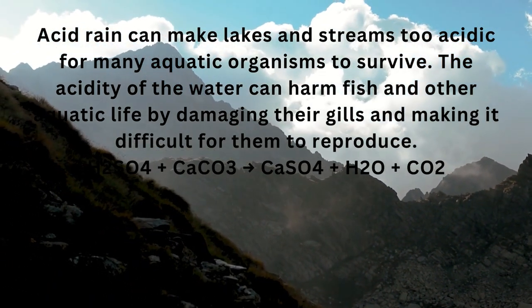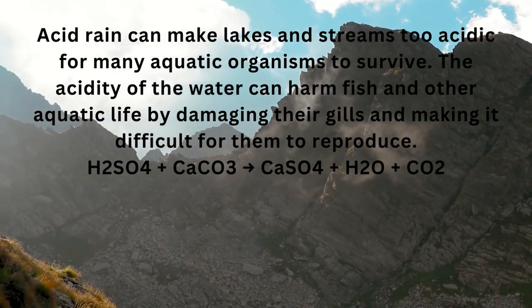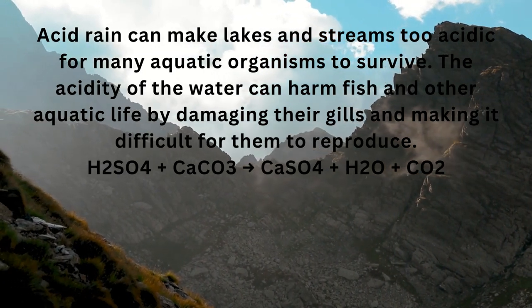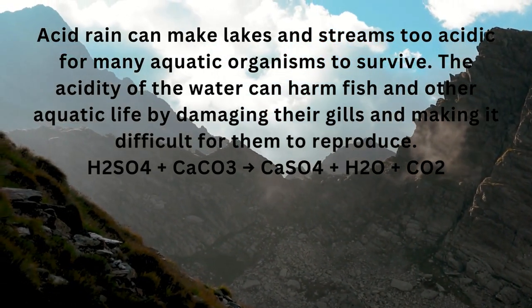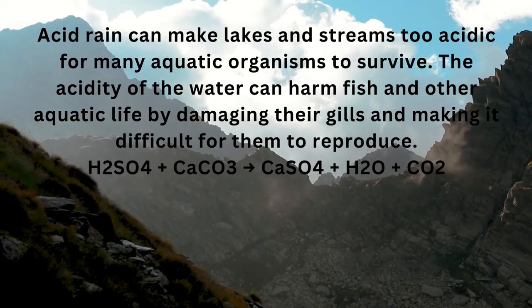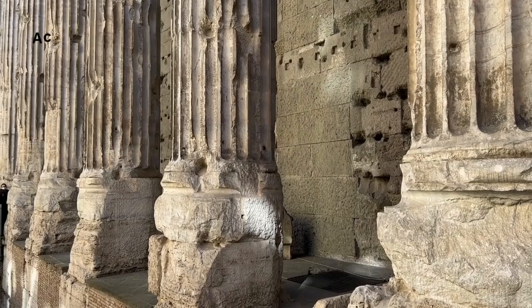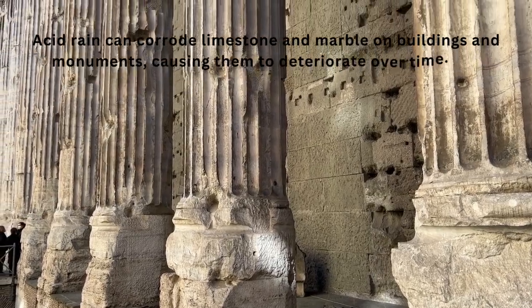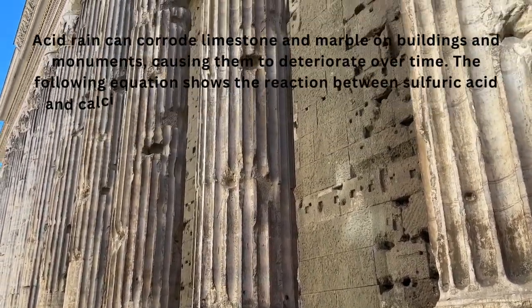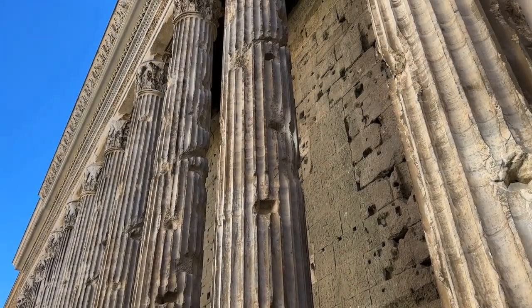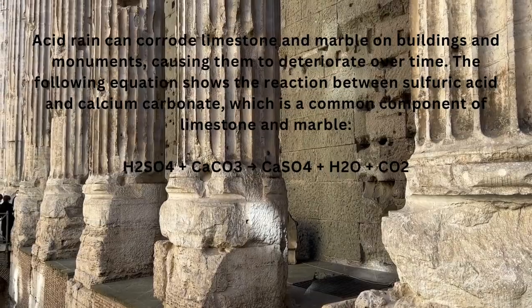H2SO4 reacts with calcium carbonate to form calcium sulfate, H2O, and CO2. Number four, corrosion of buildings and monuments. Acid rain can corrode limestone and marble on buildings and monuments, causing them to deteriorate over time, through the reaction between sulfuric acid and calcium carbonate, which is a common component of limestone and marble.